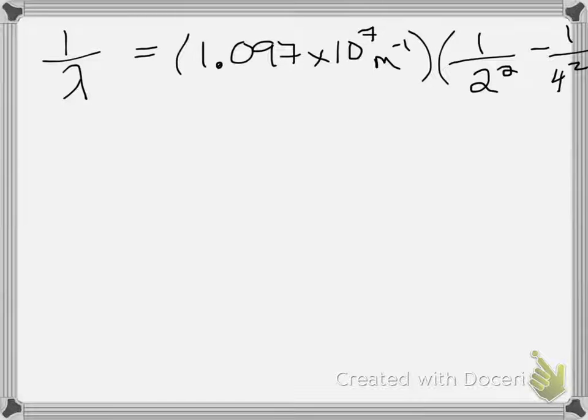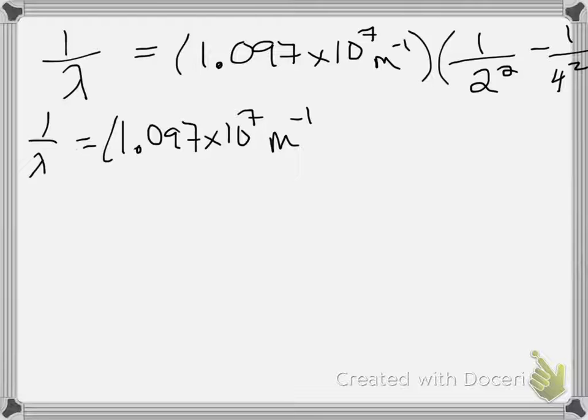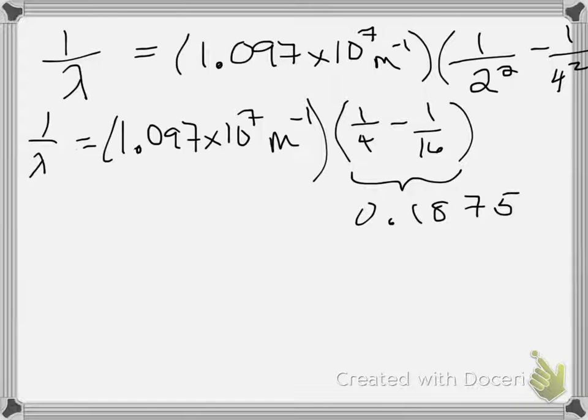This part doesn't change. So 1 over 2 squared would be 1 quarter and 1 over 4 squared would be 1 sixteenth. I'm just going to do this math and we get 0.1875. There's no strict number of significant figures here because this is kind of a counted value, so I'm not gonna worry too much about sig figs for this kind of question. Then take 0.1875 and I multiply it by Rydberg's constant.